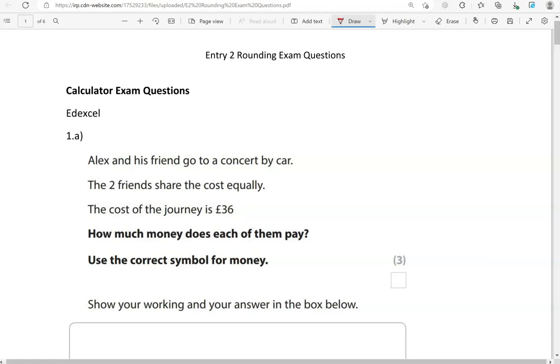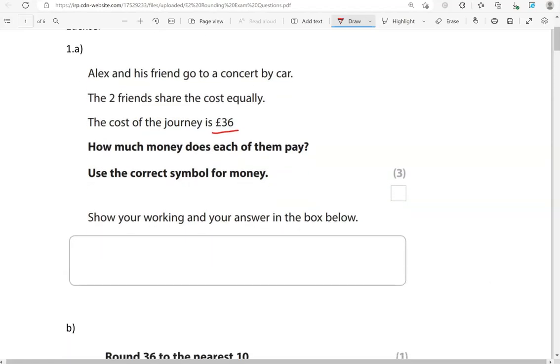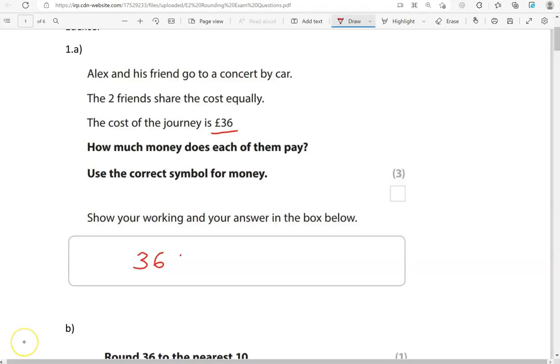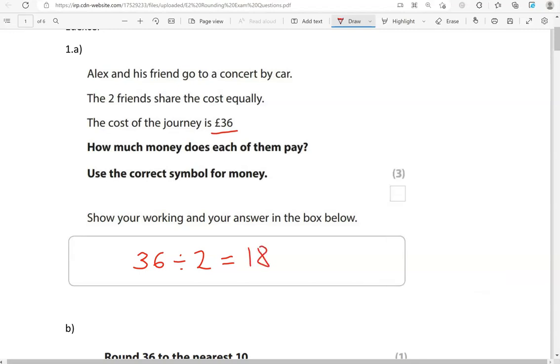Here is the first one. Alex and his friend go to a concert by car. The two friends share the cost equally. The cost of the journey is £36. How much money does each of them pay? Use the correct symbol for money. Show your working and your answer in the box below. So it's 36 divided by 2, which is 18. So each of them will pay £18.